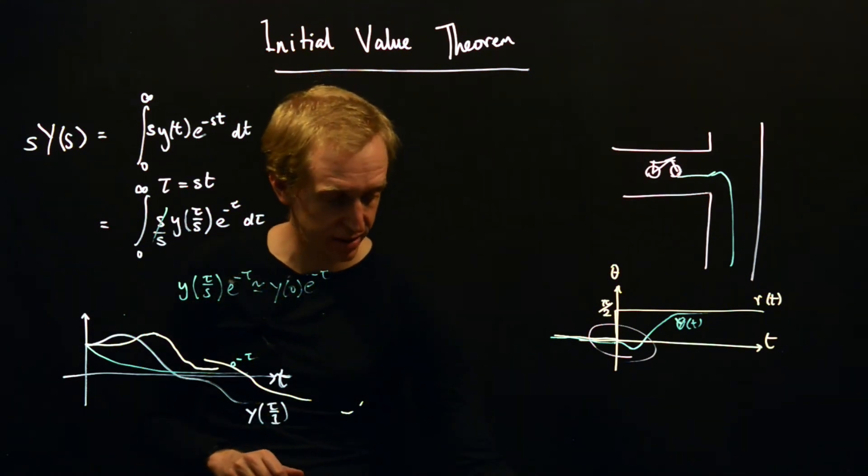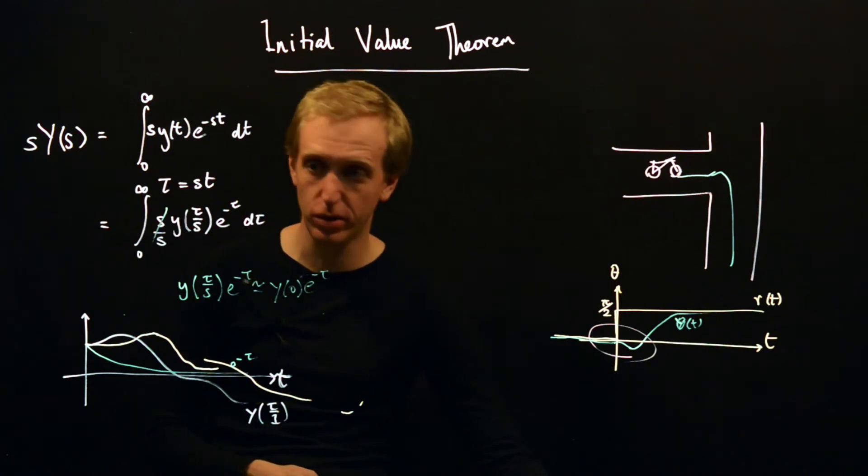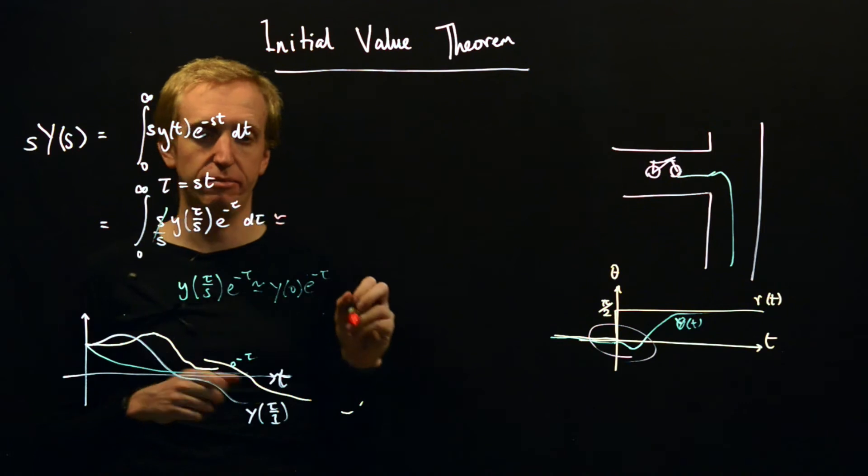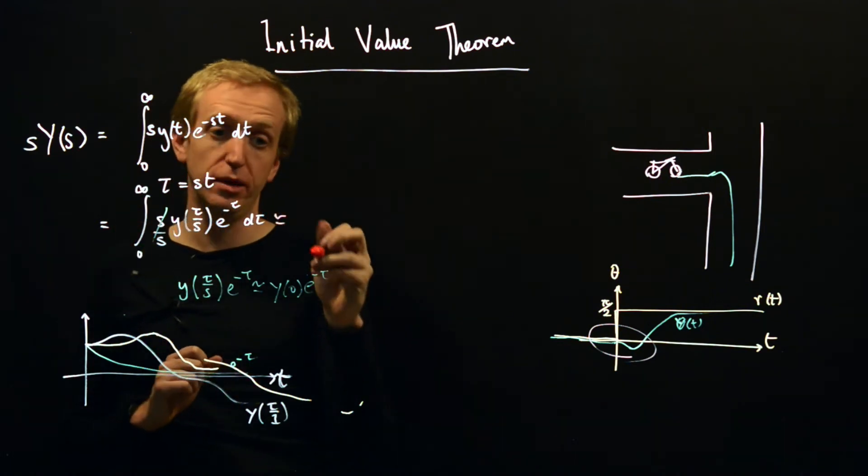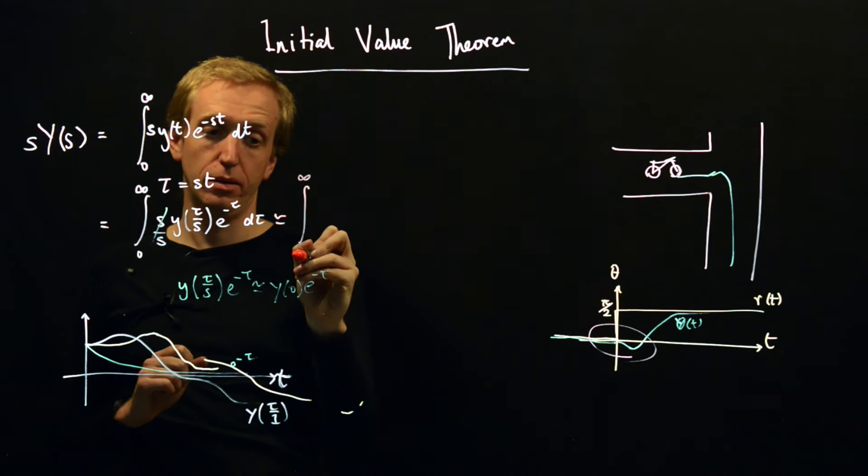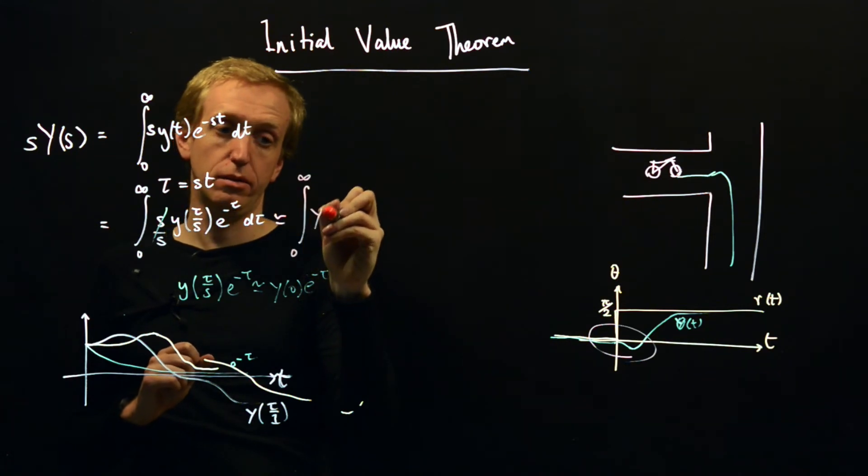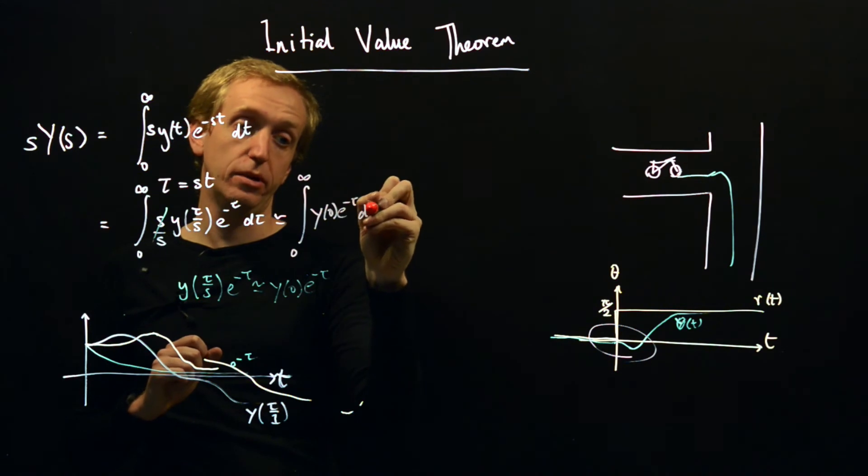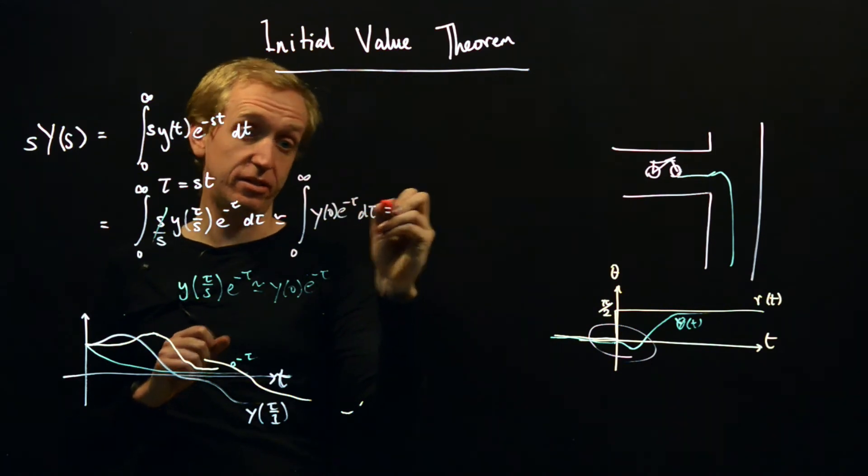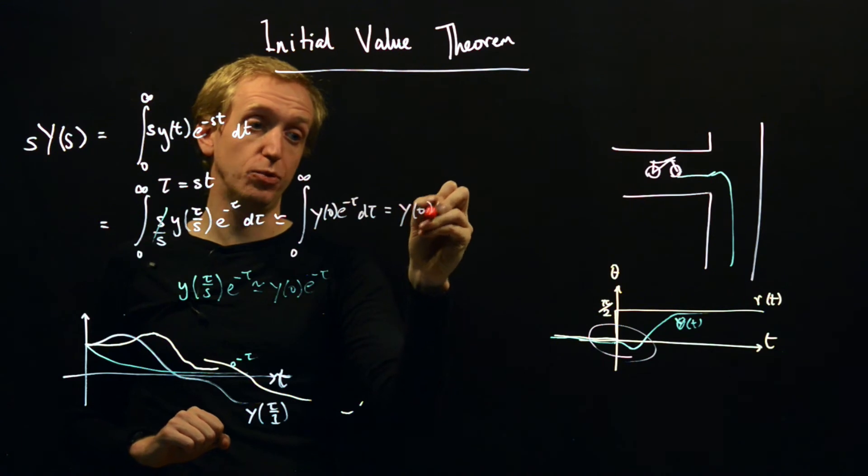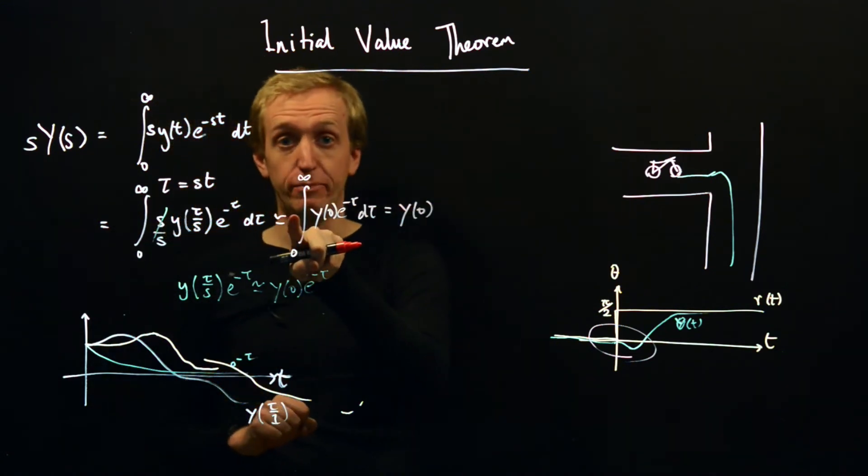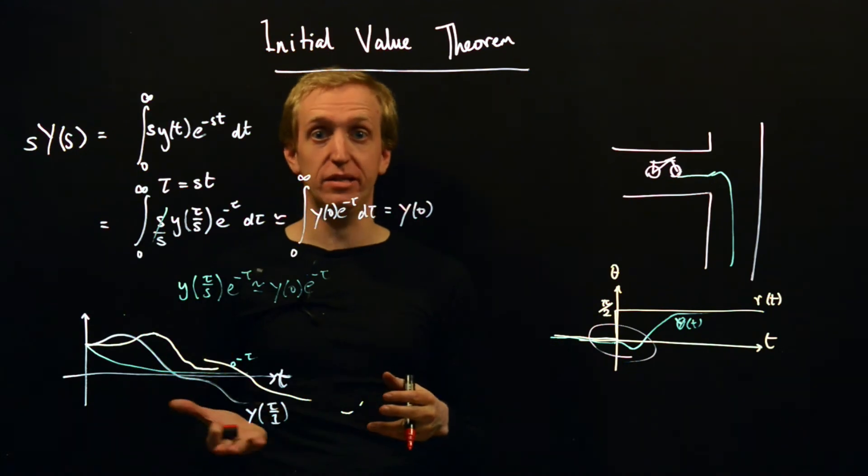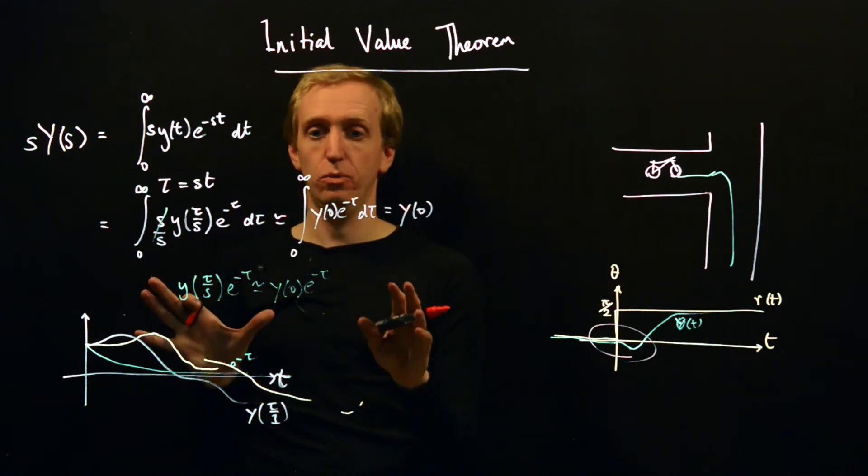As we make s very very large, this approximation gets better and better and better. And the implication of that is that this thing here is approximately equal to the integral 0 to infinity y(0)e^(-τ)dτ. And this you can easily just check is equal to y(0), and this approximation gets better and better as s gets larger and larger. In fact, in the limit as s goes to infinity, we get an equality.